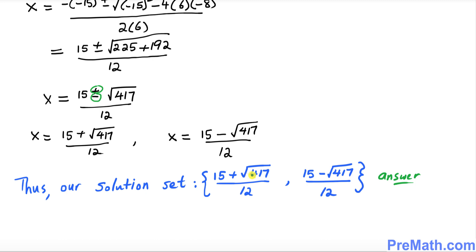So thus our solution set turns out to be 15 plus square root of 417 divided by 12, and the other one is 15 minus square root of 417 divided by 12, and that is our answer. Thanks for watching and please subscribe to my channel for more exciting videos.